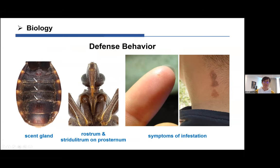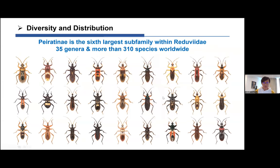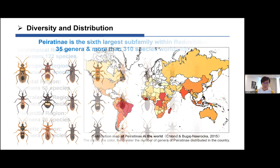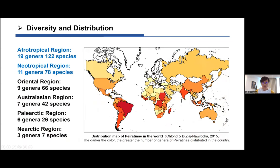This subfamily is the sixth largest subfamily within Reduviidae, with 35 genera and more than 310 species. The illustrations show quite remarkable morphological diversity. Species in this subfamily occur mainly in tropical areas, and are most species-rich in the Afrotropical and Neotropical regions.